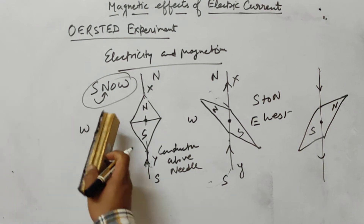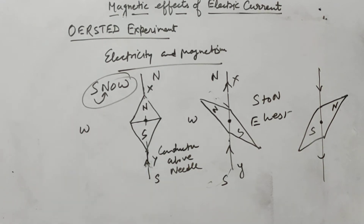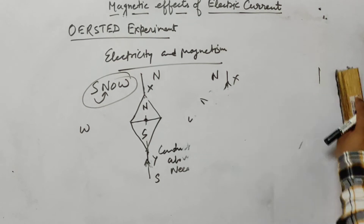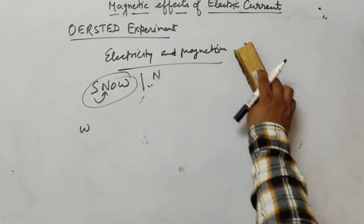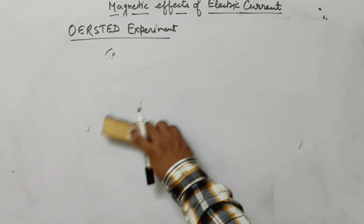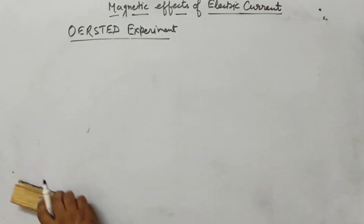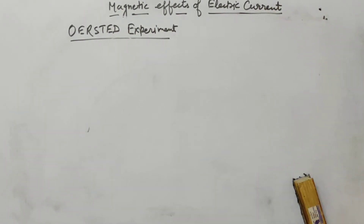Just remember the SNOW rule: south to north current flow, deflection towards west. Oersted found out the relationship between electricity and magnetism through this accidental experiment — he passed current accidentally and got the results.